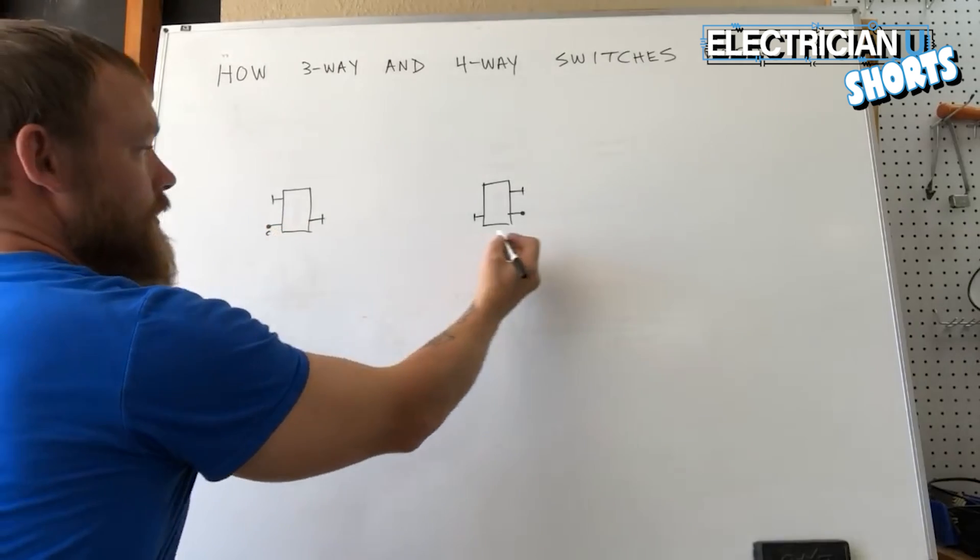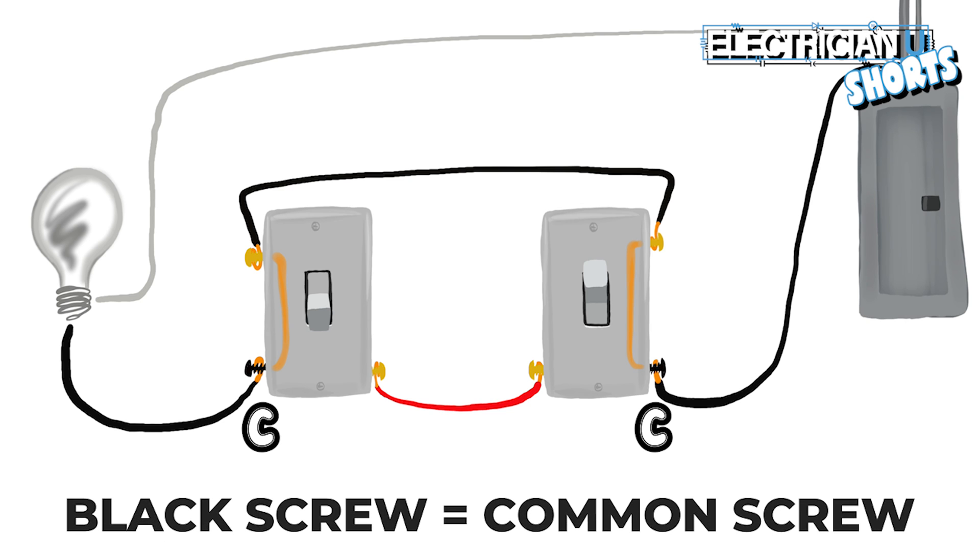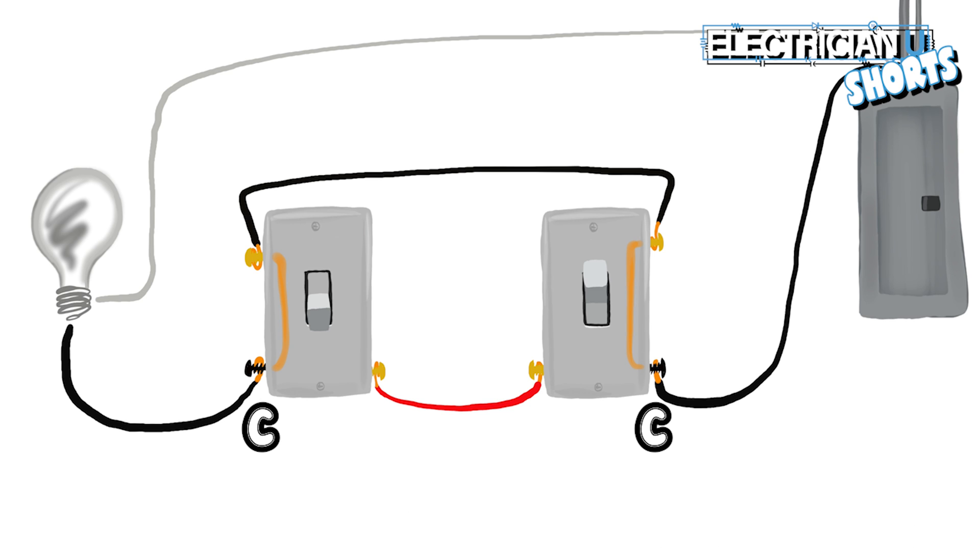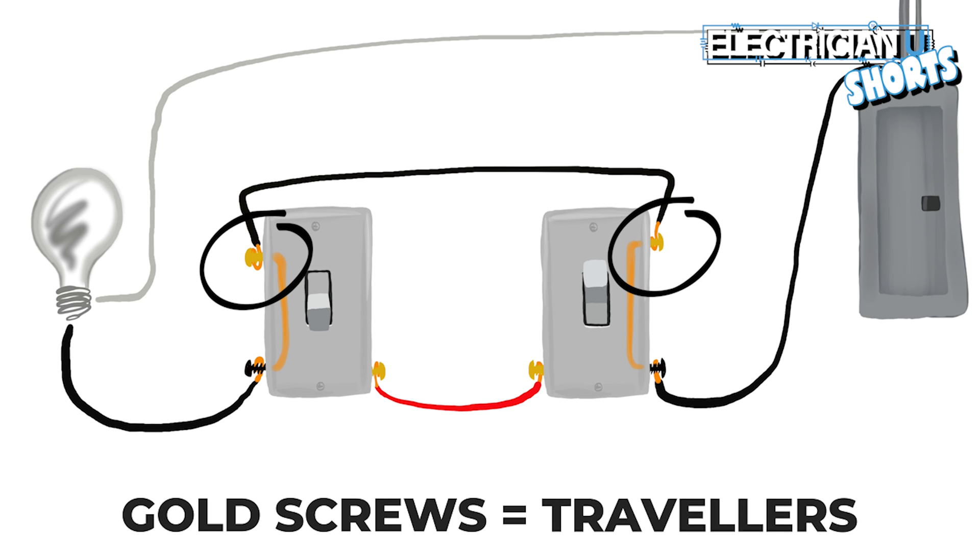I'm going to write a C under this because in a three-way switch it has a common screw. It's a black screw. The other two screws are gold screws and those are for your travelers only.